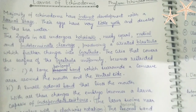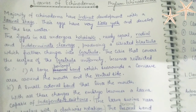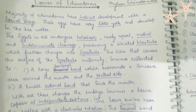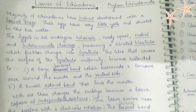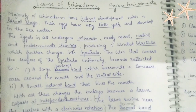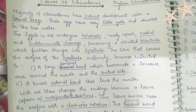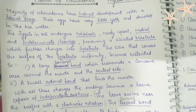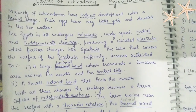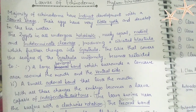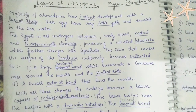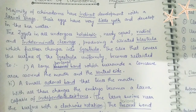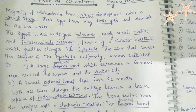The zygote undergoes holoblastic — which means nearly equal — radial and indeterminate cleavage, producing a ciliated blastula. When the zygote undergoes cleavage, it forms the blastula stage in which the cells are very much divided and ciliated. The zygote shows holoblastic, radial and indeterminate cleavage.